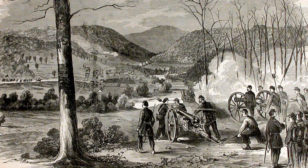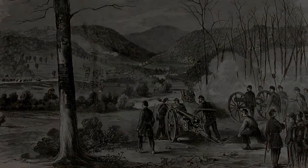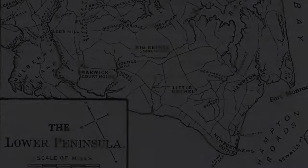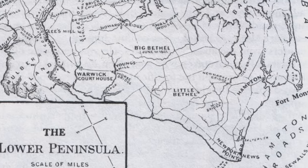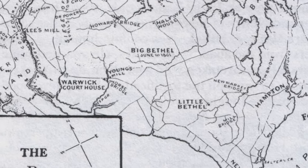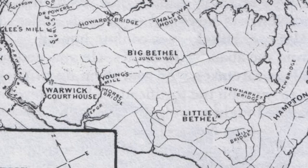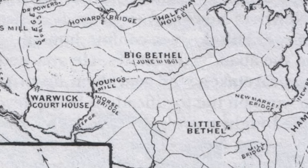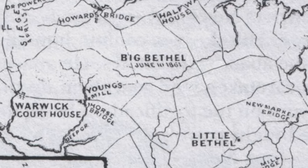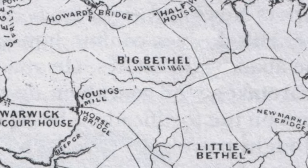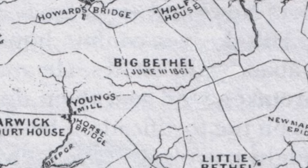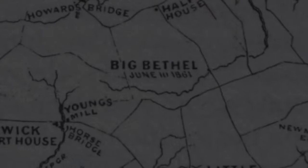On June 3rd, Union and Confederate forces skirmished at Philippi, Virginia. A week later, the two sides met again on the Virginia Peninsula in what would be known as the Battle of Big Bethel.